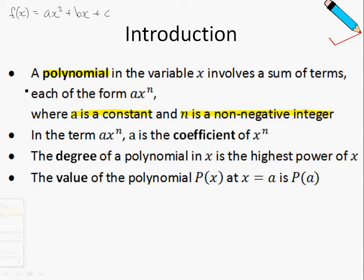If this is still a little too abstract for you, let me put in some numbers so it looks easier to understand. For example, 2x squared plus 5x plus 7 is a polynomial, and in fact, this is a quadratic polynomial.